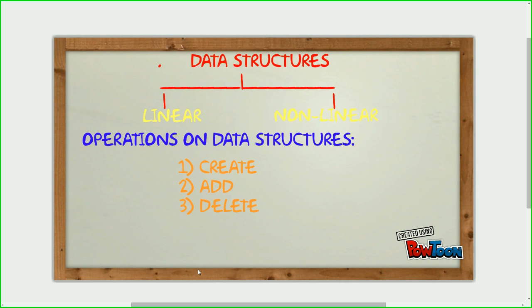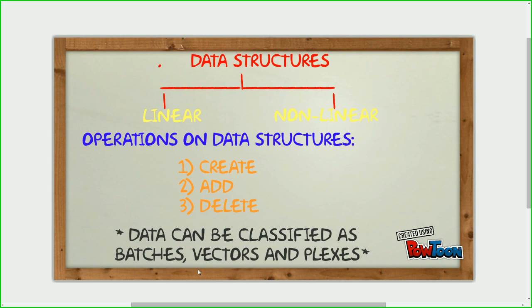Data structures are classified in two categories, linear and non-linear. Operations that can be done on them are create, add, delete. Data can be classified as batches, vectors and plexes.